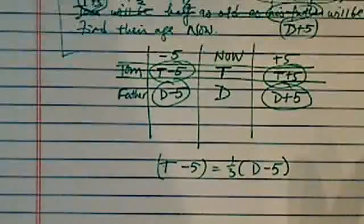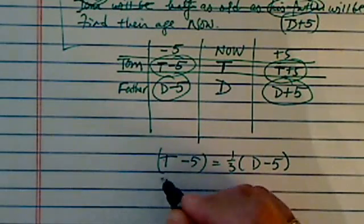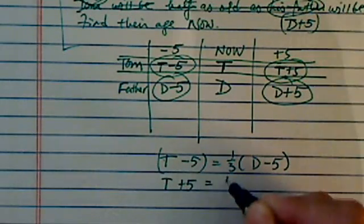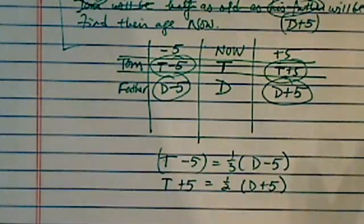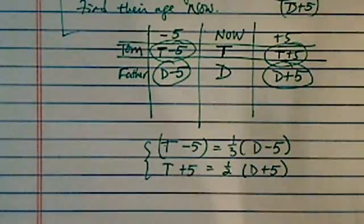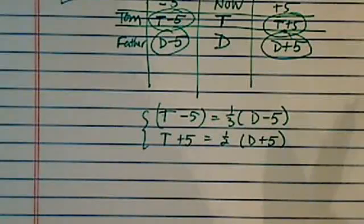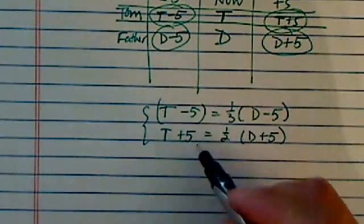So the trick is, have the table have you sort through the information. T plus five is equal to half of D plus five. From there, it's pretty much downhill. Two equations, two variables, very easy to solve.